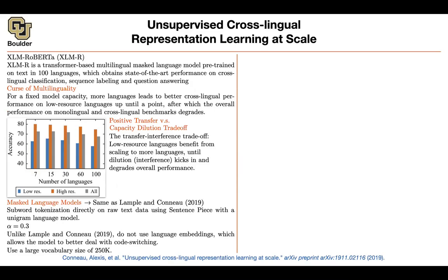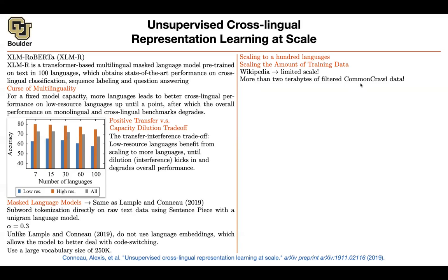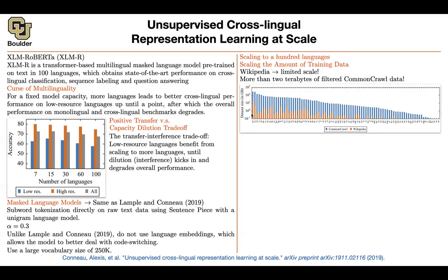You are going to use a large shared vocabulary among all 100 languages, so a larger vocabulary size makes sense. When you scale to 100 languages, you also scale the amount of training data. The problem with Wikipedia is that it has limited scale — for some low-resource languages you have very few observations or perhaps nothing. The good thing about CommonCrawl data is that you get more data across those different languages.